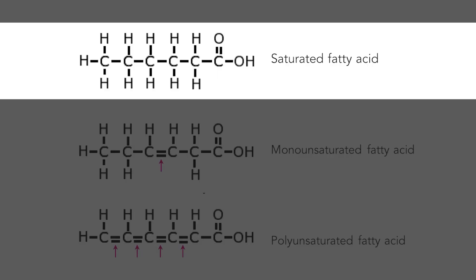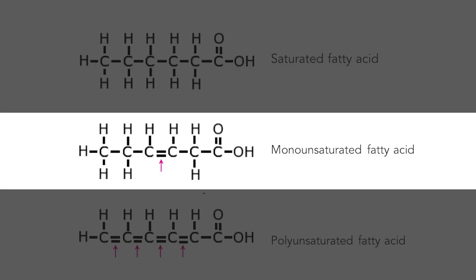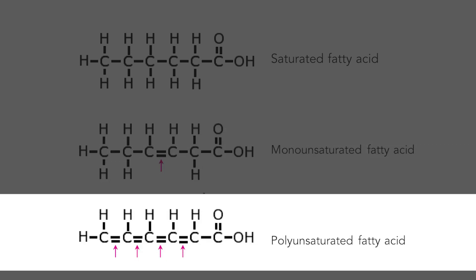When we talk about any fat, we're talking about a molecule that has a carbon backbone with a certain number of hydrogens and different types of bonds. A fully saturated fatty acid has a string of carbons with hydrogens at every carbon on both sides — that's a saturated fat. When you take off one of those hydrogens and replace it with a double bond, you have a monounsaturated fatty acid — like the primary fatty acid in olive oil or avocado oil. And if you were to take another hydrogen off, you'd have at least two double bonds — that's a polyunsaturated fat, or PUFA.